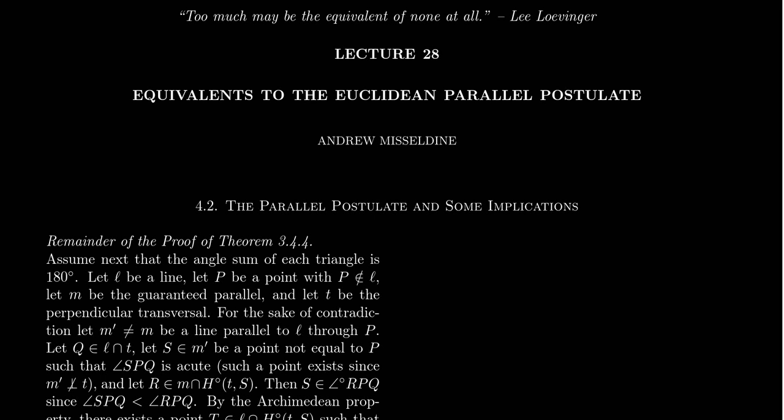Welcome back to Lecture 28 from our lecture series, Math 3130, Modern Geometries at Southern Utah University. I will be your professor, Dr. Andrew Misseldein. Thanks for watching. This lecture is going to be loosely based upon Section 4.2, the parallel postulate and some implications from the textbook Roads to Geometry by Wallace and West. We'll title the lecture: Equivalents to the Euclidean Parallel Postulate.